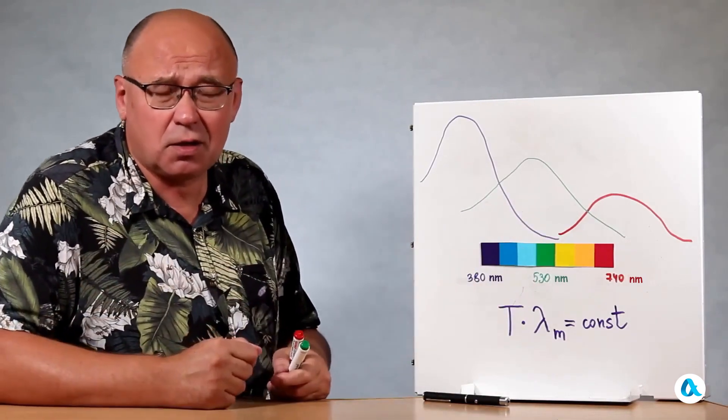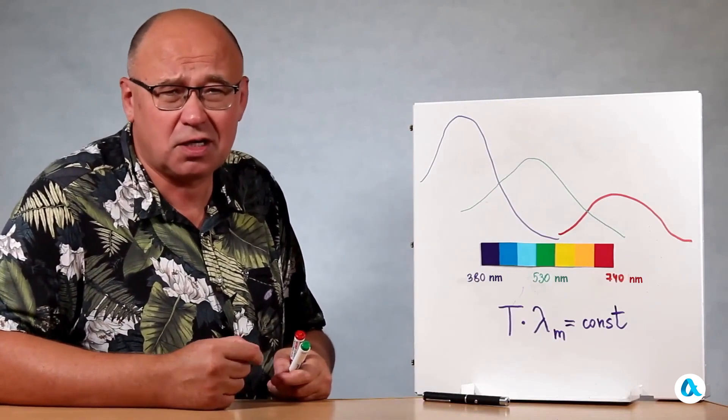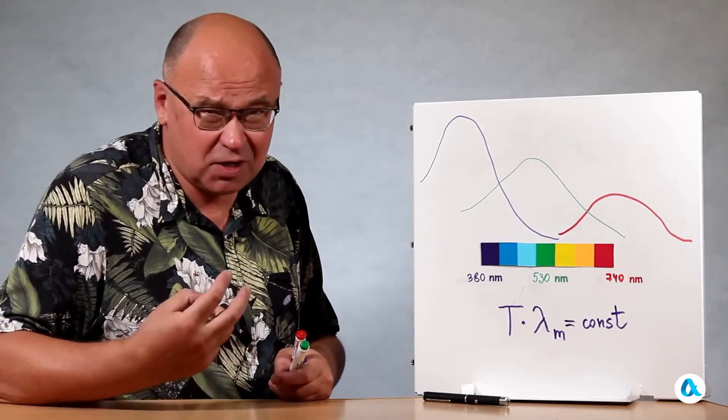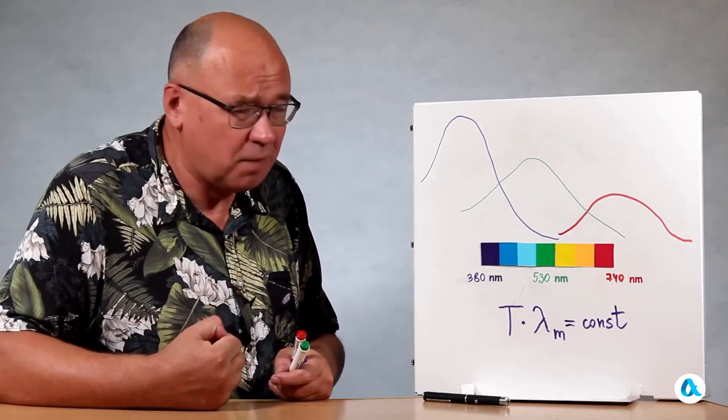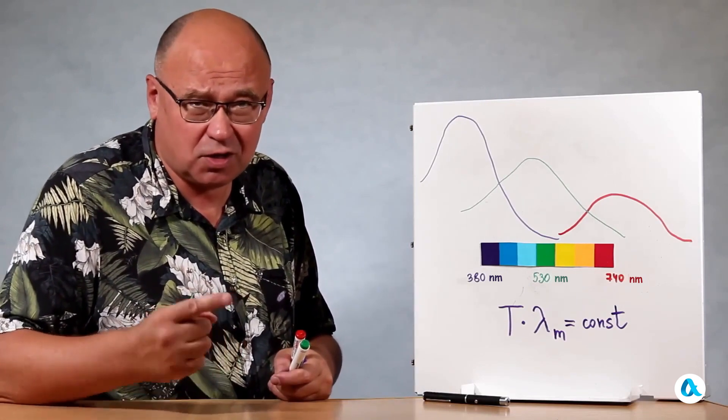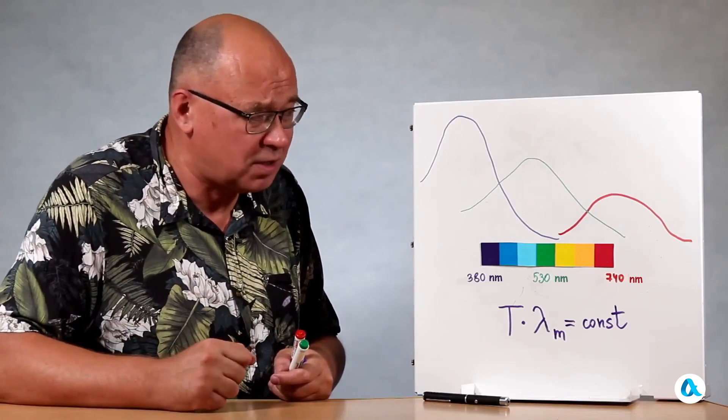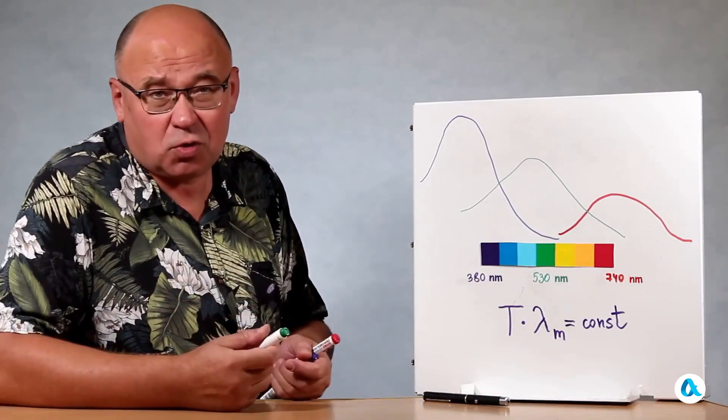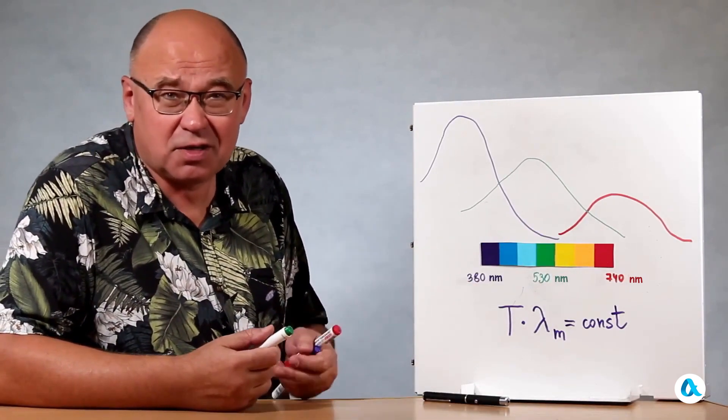And in our eyes, all the cones that perceive blue, green, and red are all quite strongly stimulated. I probably used the word identical incorrectly, but they are quite strongly stimulated. And we essentially perceive the mixture of all spectral colors as being perceived as white.